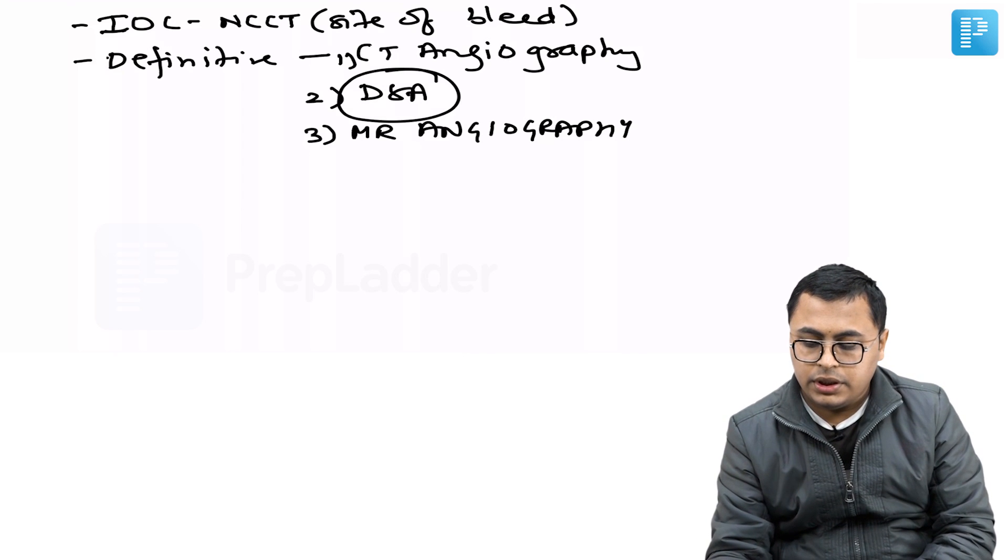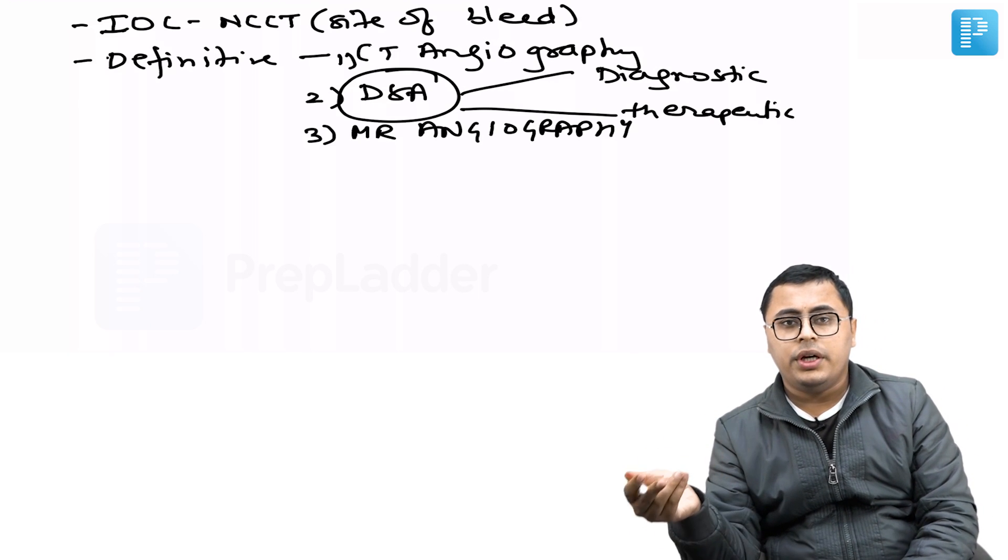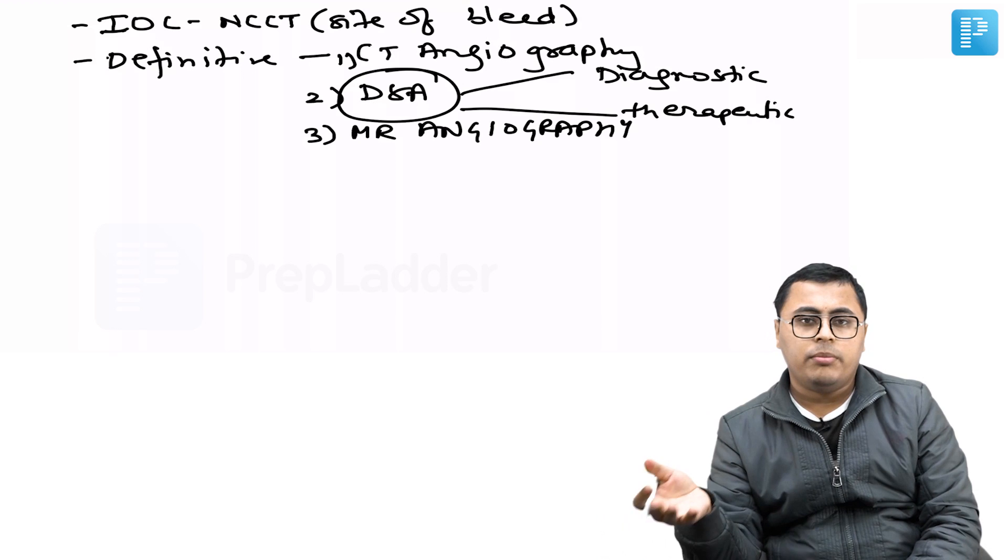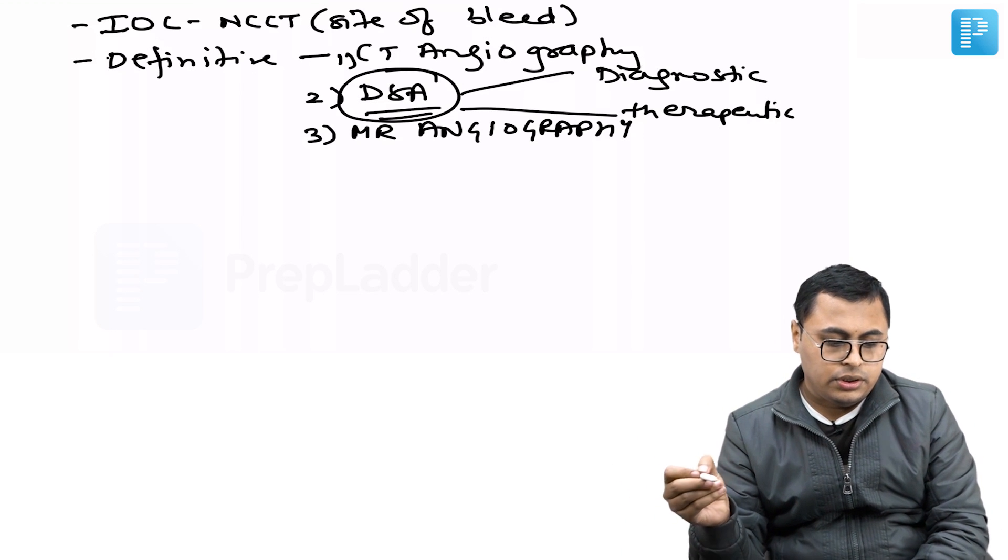DSA has the advantage that it can be both diagnostic and therapeutic at the same time. If an aneurysm is found during a DSA, its coiling can be done by endovascular method. That is why DSA is both diagnostic as well as therapeutic.